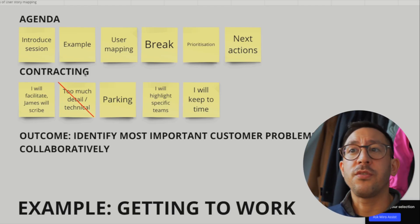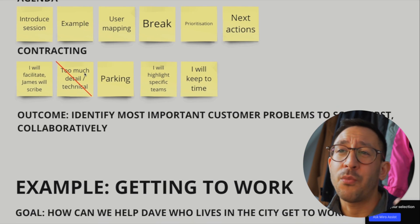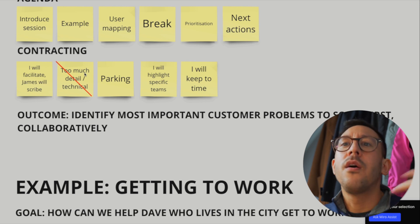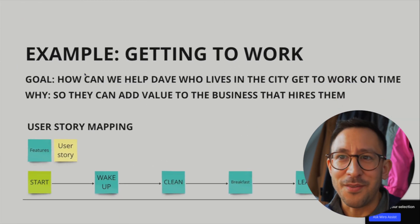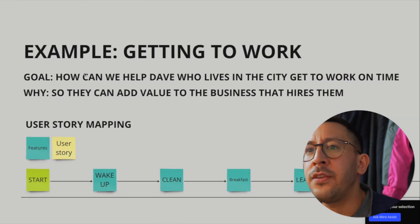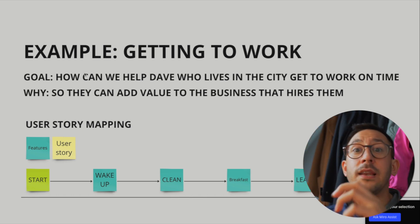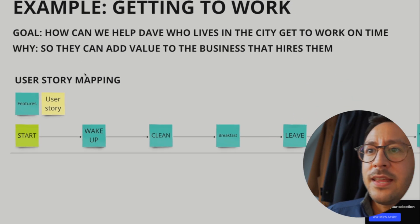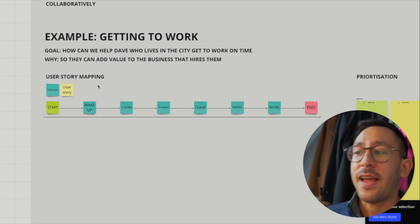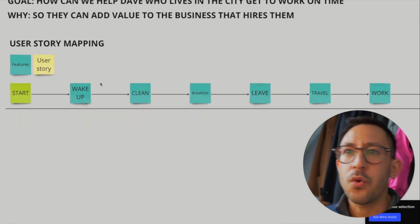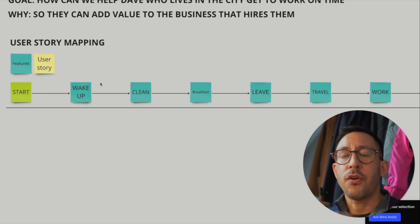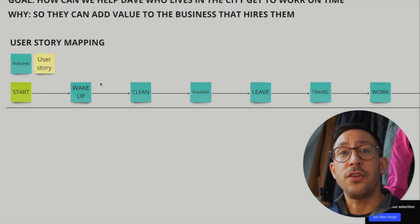The best way to show you how all this works is to use an example. How can we help Dave, who lives in the city, get to work? That's important so he can add value to the business that hires him. User story mapping is really simple — you can see here we have a start and a finish, and then we have these big lumps of things that go together: waking up, cleaning himself, having breakfast, leaving the house, travelling, getting to work. We call those features — those are the big things. And underneath them are the user stories.